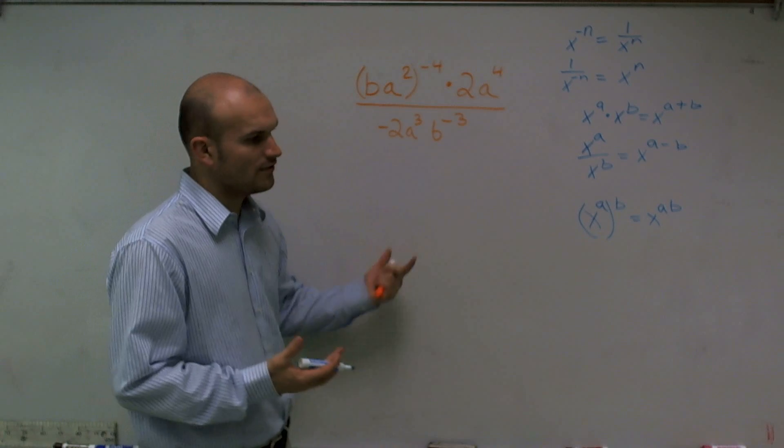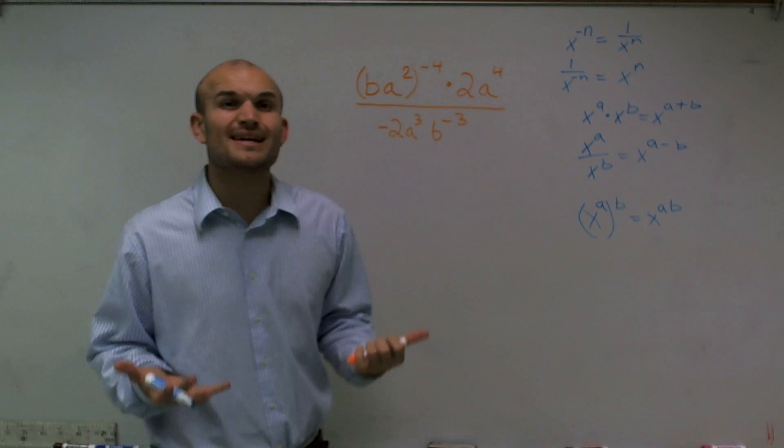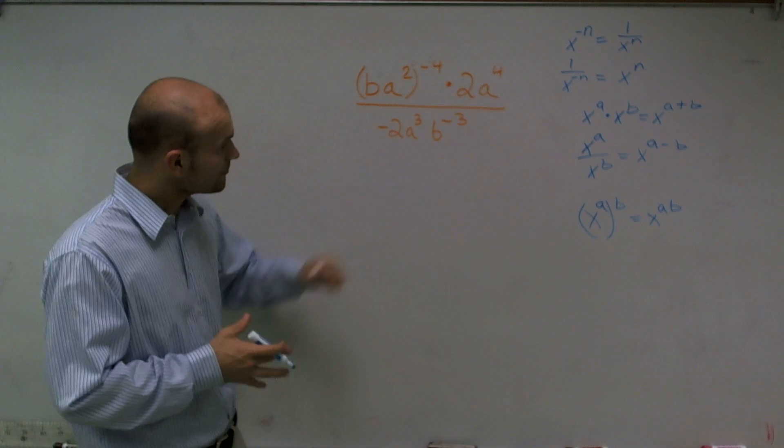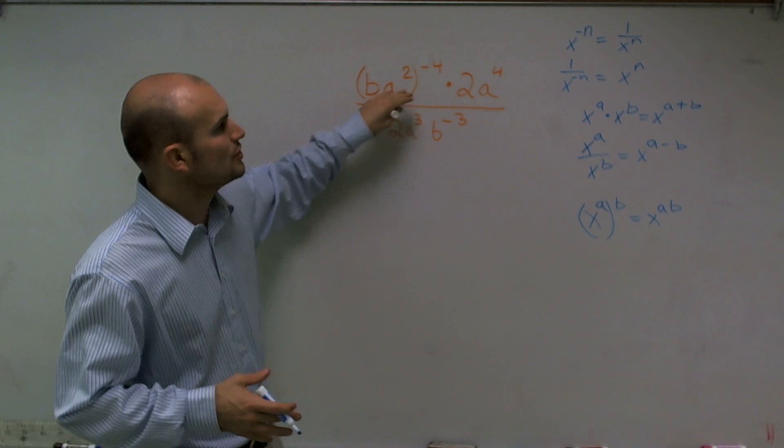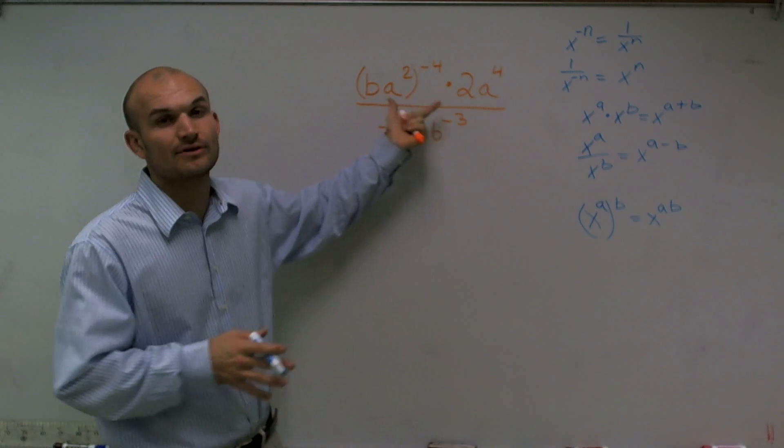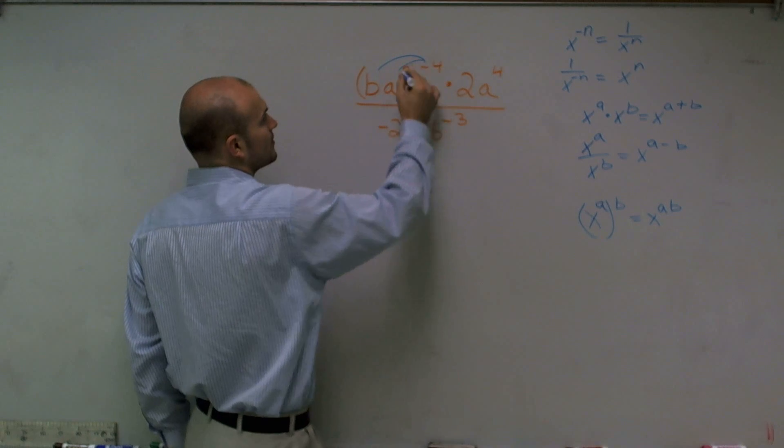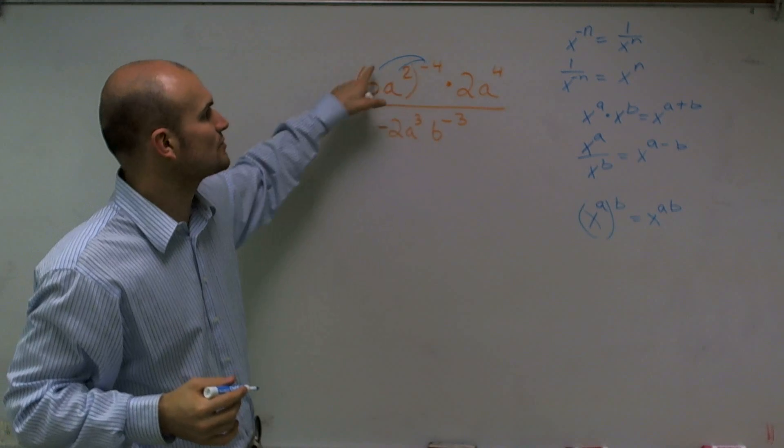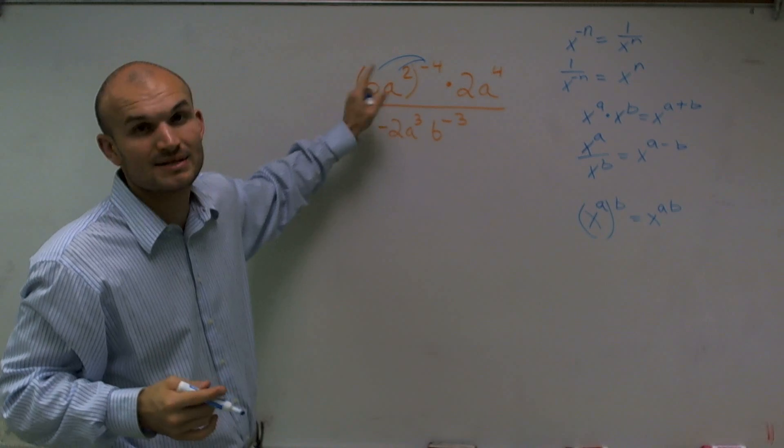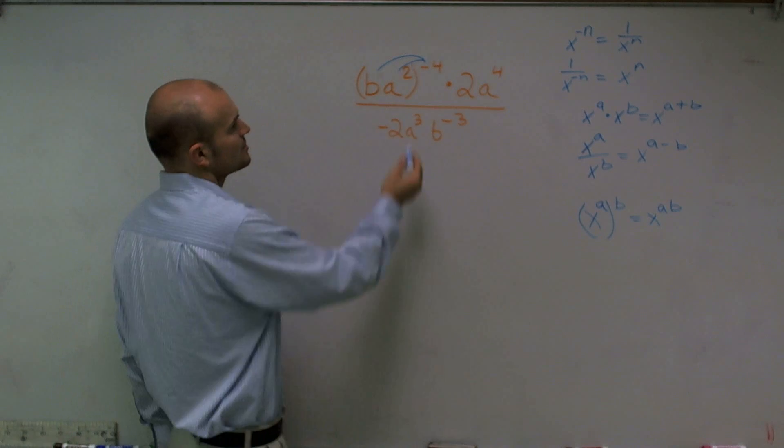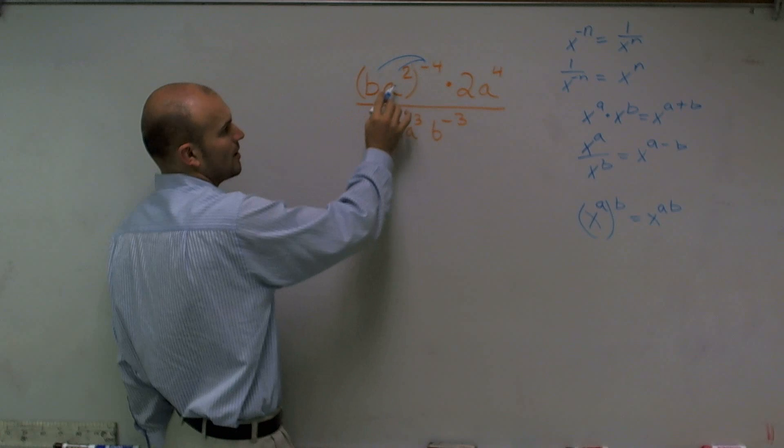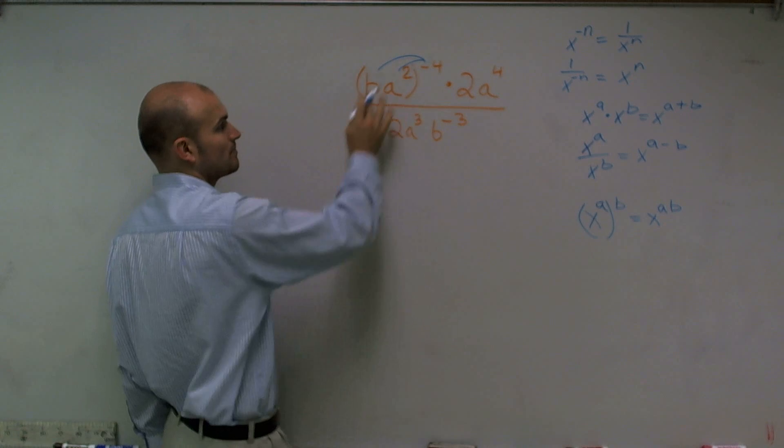So when solving this, or when we're trying to simplify this problem, we need to look at using PEMDAS first. And that means I need to get rid of these parentheses. So I'm going to use this operation first. So remember, when you have an exponent, that exponent is referred to every single one of your terms inside your parentheses. So I have b raised to the negative fourth power and a squared raised to the negative fourth power.